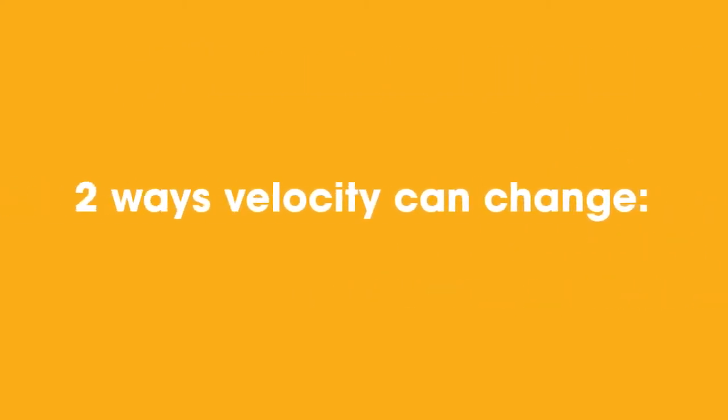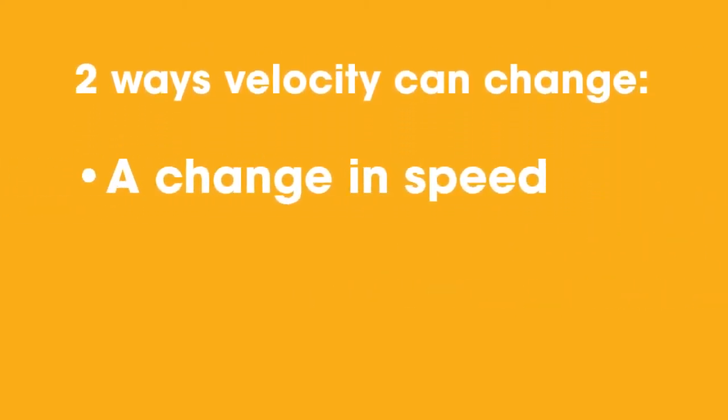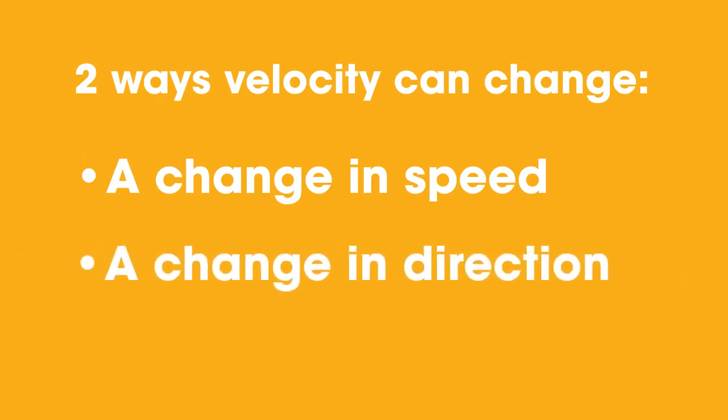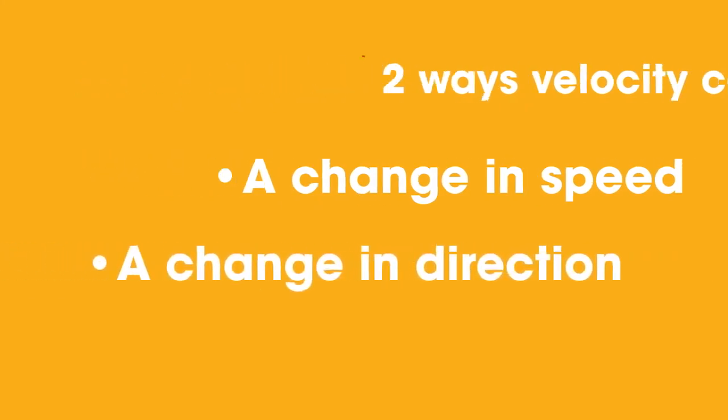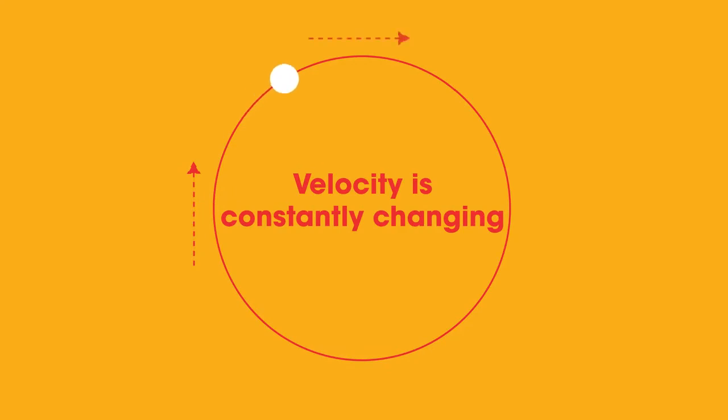The two ways in which velocity can change are a change in speed or a change in direction. So when you are moving in a circle at a constant speed, your velocity is constantly changing because the direction you are moving in is also constantly changing.